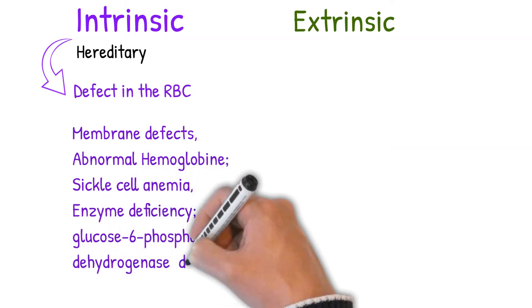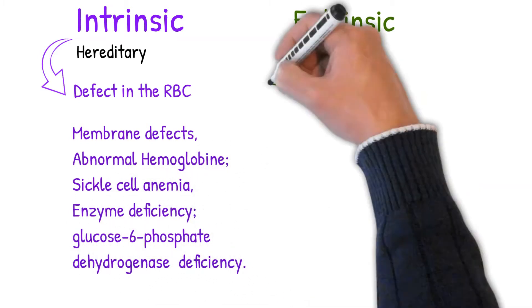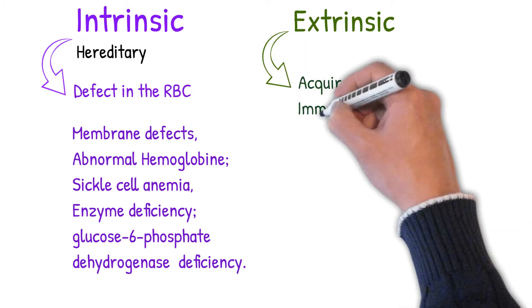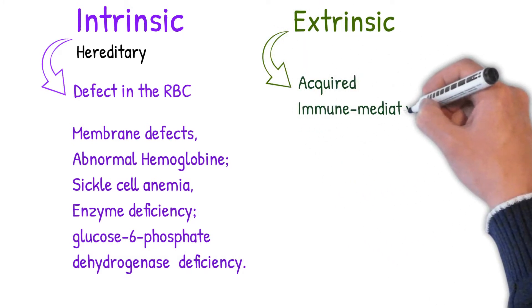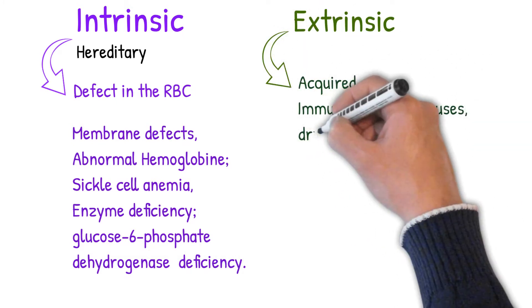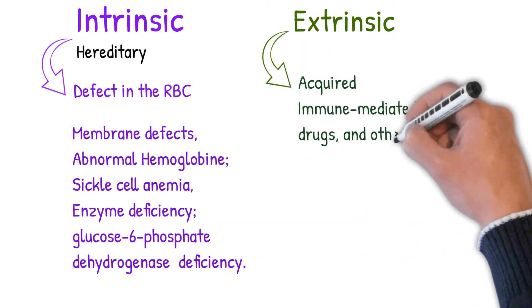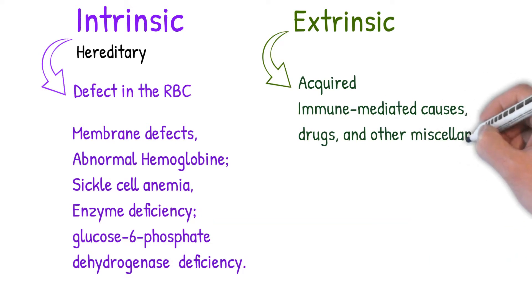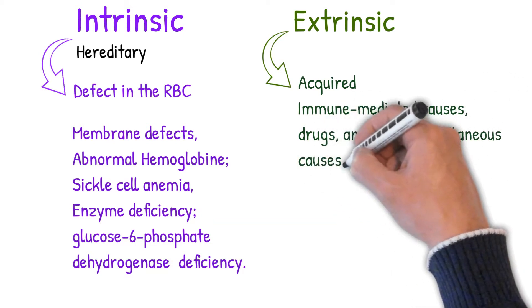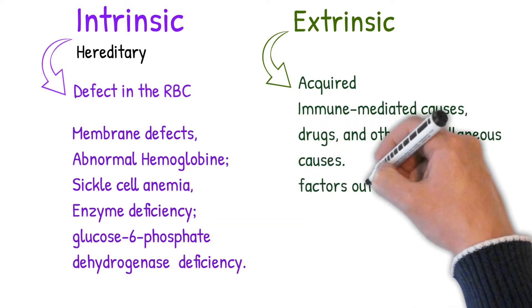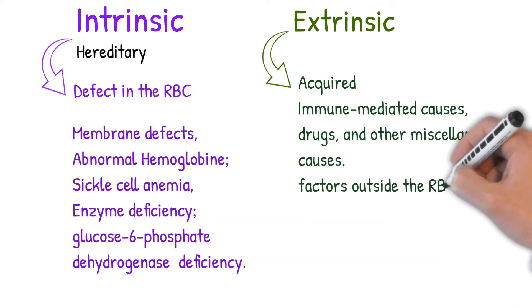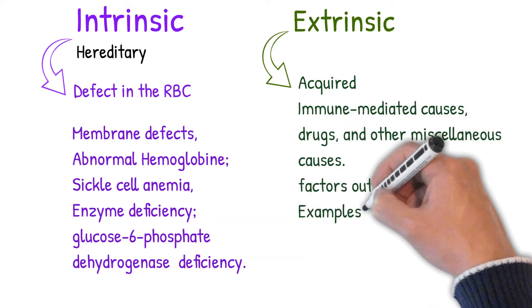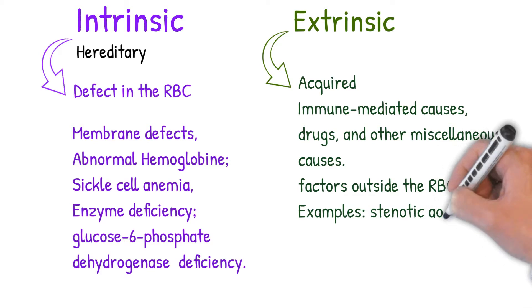Extrinsic causes: acquired hemolytic anemia may be caused by immune-mediated causes, drugs, and other miscellaneous causes. Extrinsic refers to factors outside the RBC that are causing the hemolytic anemia.